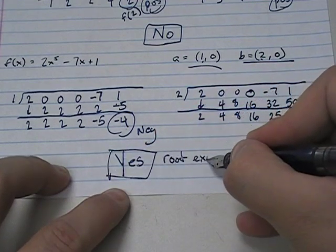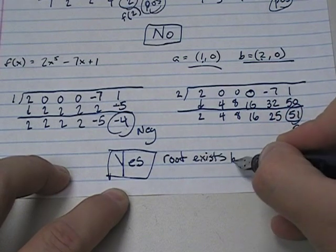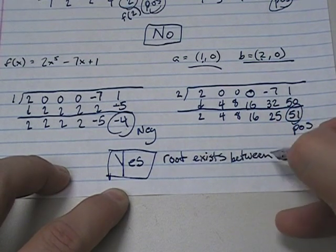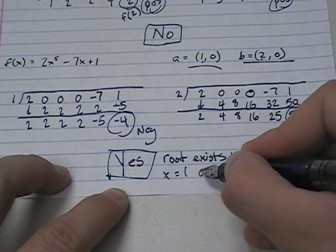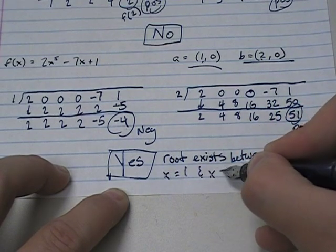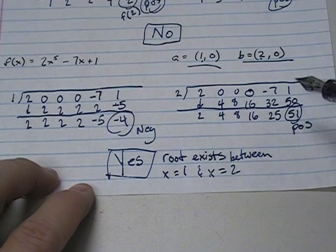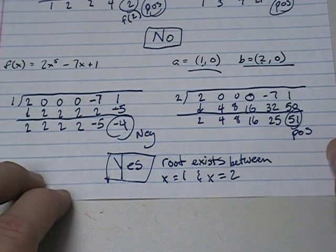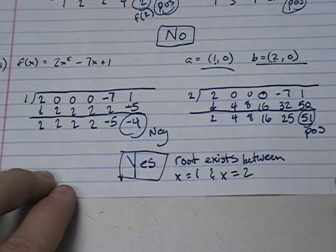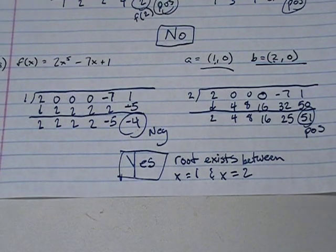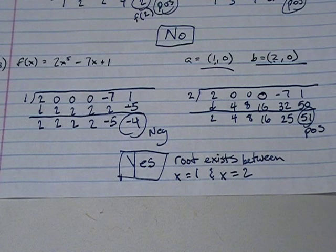A root exists between x equals 1 and x equals 2. A root does exist between x equals 1 and x equals 2. So this is an easy way to tell if you have a guess. Well, I think there's an answer between 2 and 5 or 2 and 3 or negative 1 and 1. You can very easily use the intermediate value theorem to find out if that is true. So if you have any questions about this problem, please let me know.